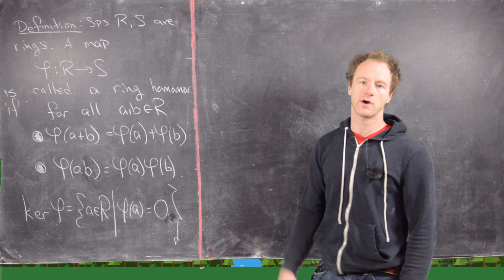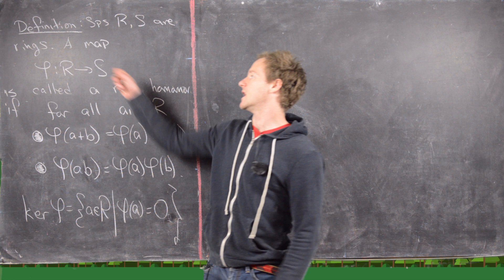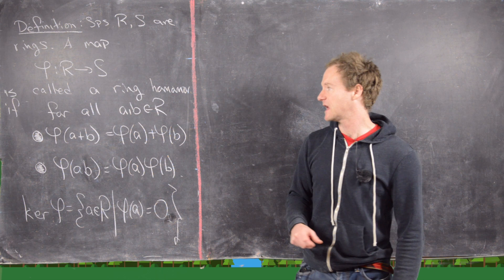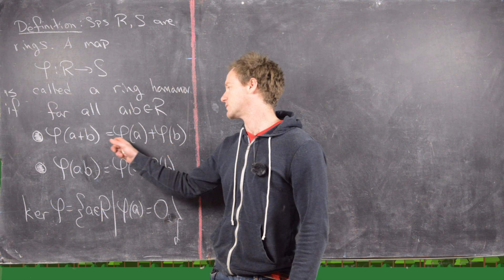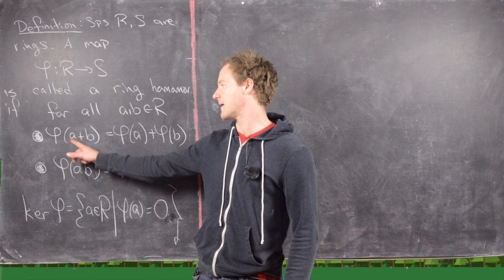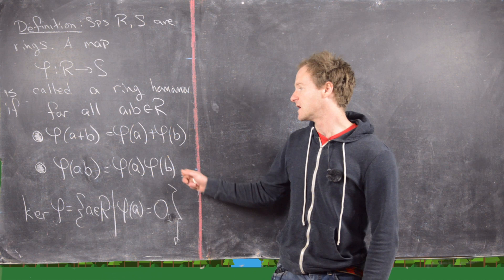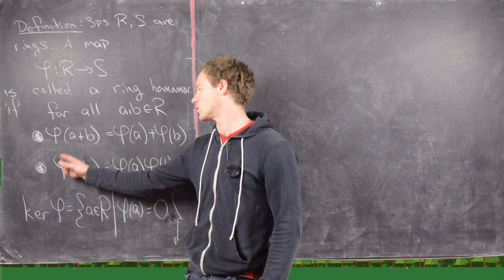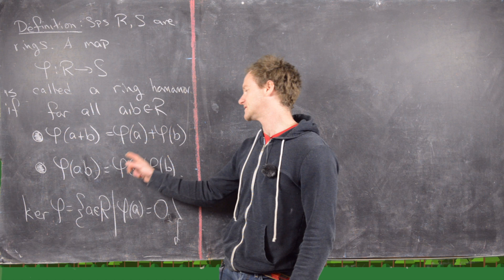Suppose R and S are rings. Then a map φ from R to S is called a ring homomorphism if for all A and B in R: φ(A+B) = φ(A) + φ(B) — notice this addition on the left happens in R, and on the right in S — and φ(AB) = φ(A)φ(B), where multiplication on the left happens in R and on the right in S.